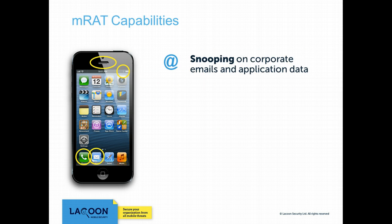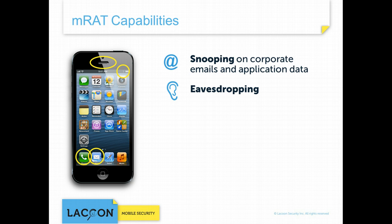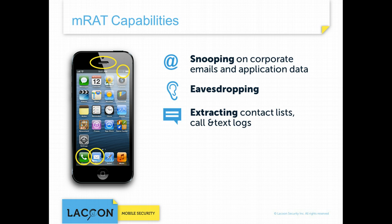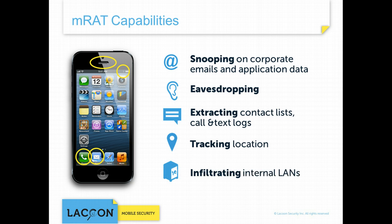An EMRAT on an infected employee's device is capable of snooping on corporate emails containing contracts, eavesdropping on customer and board meetings, accessing third-party apps such as Skype, and retrieving the data of enterprise-dedicated apps in order to track roadmap activities. EMRATs can also track a sales executive's location and infiltrate the internal corporate network to retrieve, for example, sensitive passwords of corporate servers.